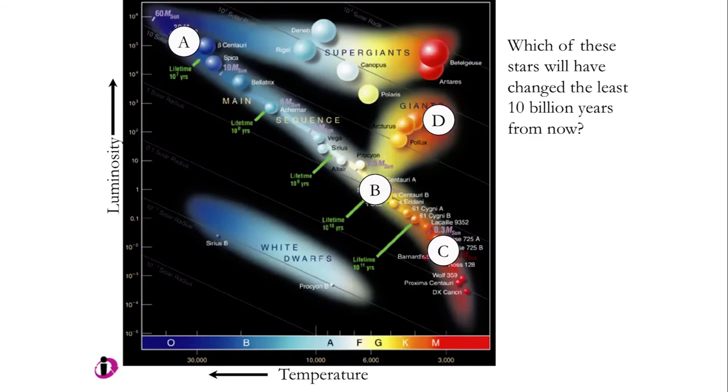But down here, star C, this has a lifetime of 10 to the 11 years, this is 100 billion years in lifetime, right? The universe is only 14 billion years old now. In 10 billion years, the oldest this star could possibly be is 24 billion years, and its lifetime is way longer than 100 billion years. So this star in 10 billion years from now will still be sitting there chugging along, slowly burning its hydrogen into helium on the main sequence, and will not have moved at all. And this is an example showing how we can use stellar mass to get a relative age.